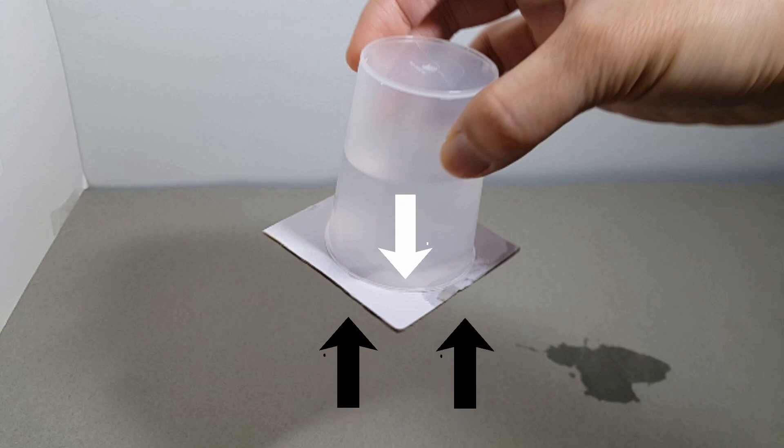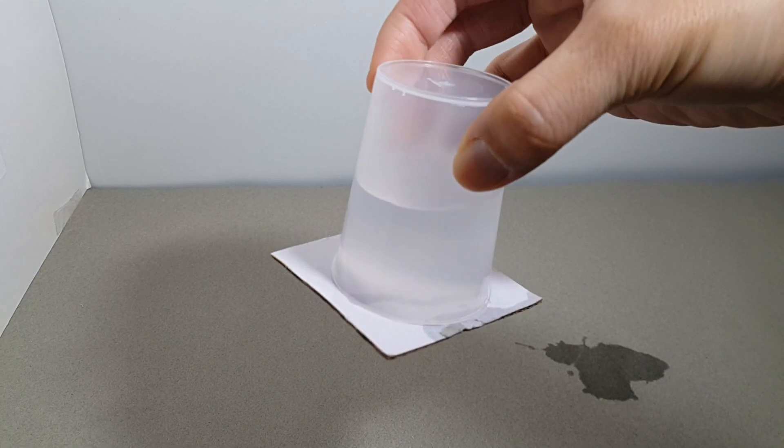The paper and water do not drop because the air pressure pushing the paper up is greater than the water pressure pushing down.